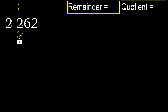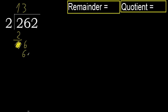2 minus 2 is 0. Next, bring down the 6. 2 multiplied by 3 is 6. 6 is not greater. Ok. Subtract. Next.